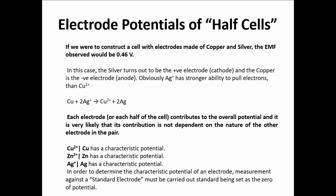The overall cell potential — the potential you read on your voltmeter — comes from a contribution from both half cells, that is from both electrodes. The reduction potential of each electrode is a characteristic of that electrode, of that metal. For example, Cu²⁺/Cu⁰ has a characteristic potential, Zn²⁺/Zn⁰ has a characteristic potential, and so it is true also for Ag.